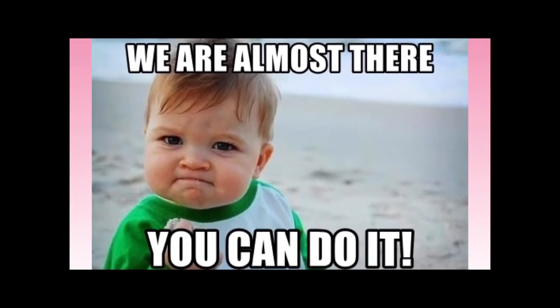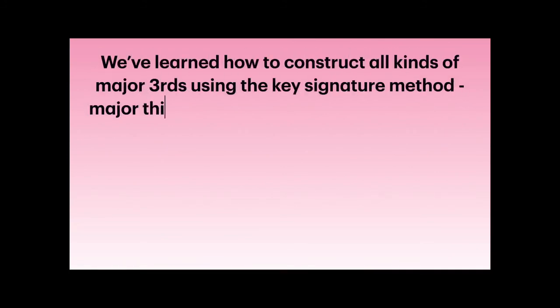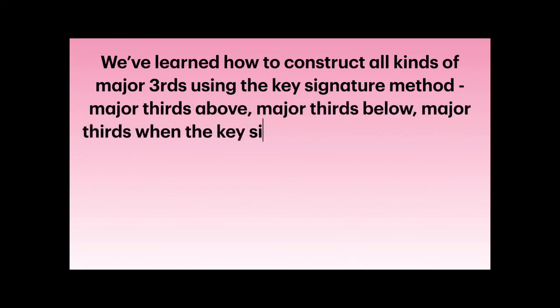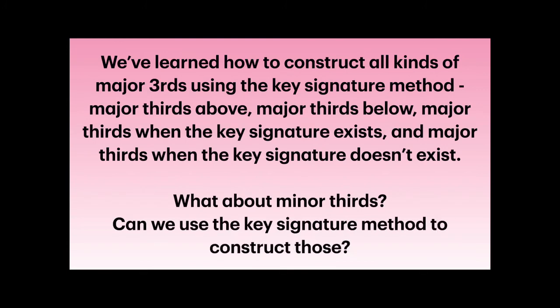I know this is a lot of information — we're almost through all of it. We've learned how to construct all kinds of major thirds using the key signature method: major thirds above, major thirds below, when the key signature exists, and when it doesn't. What about minor thirds? Can we use the key signature method to construct those? The short answer is yes. It's important to remember that a major third is four half-steps apart and a minor third is three half-steps apart — a minor third is one half-step narrower than a major third.